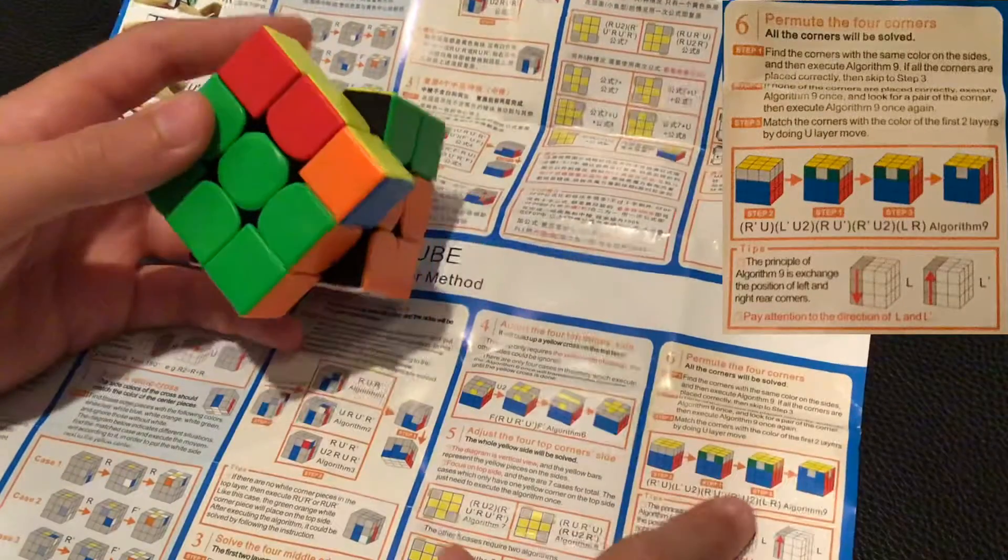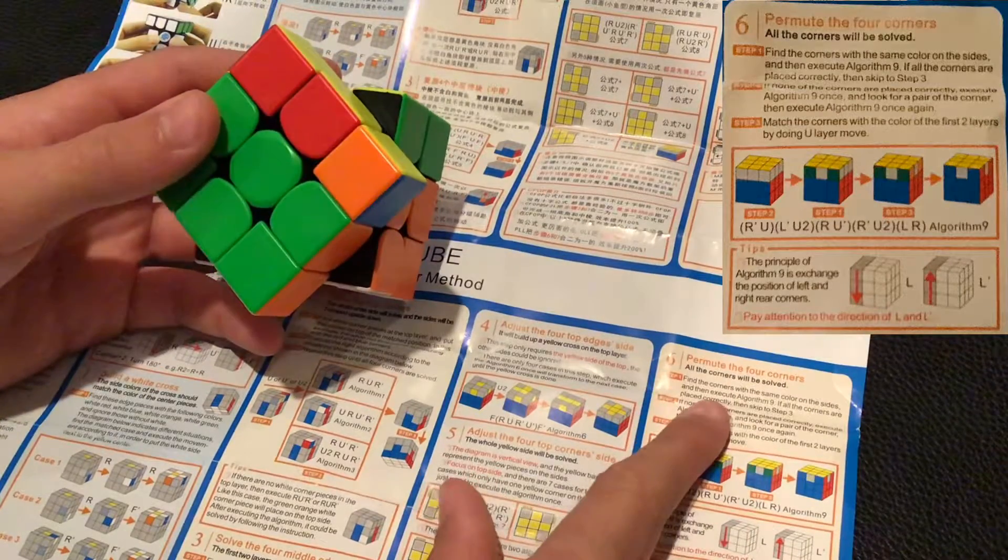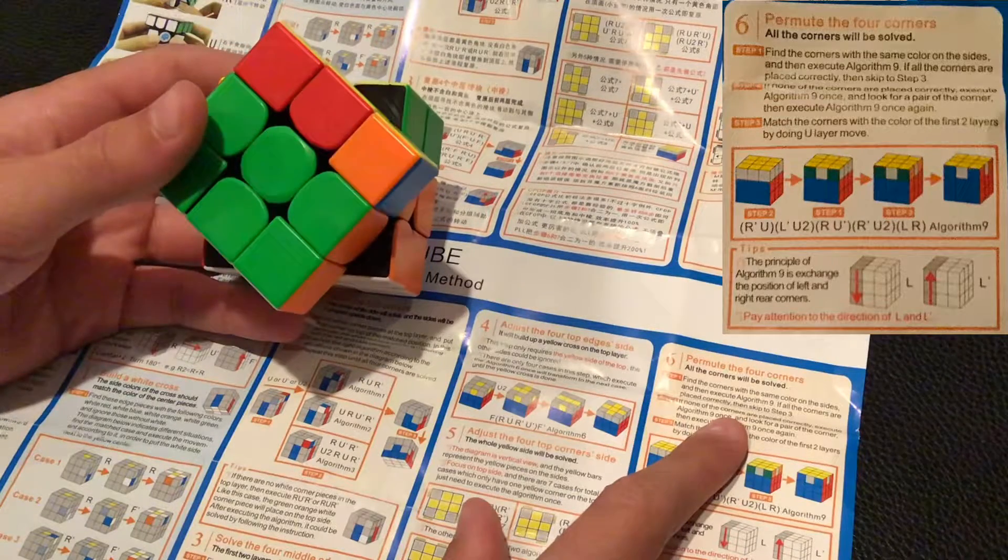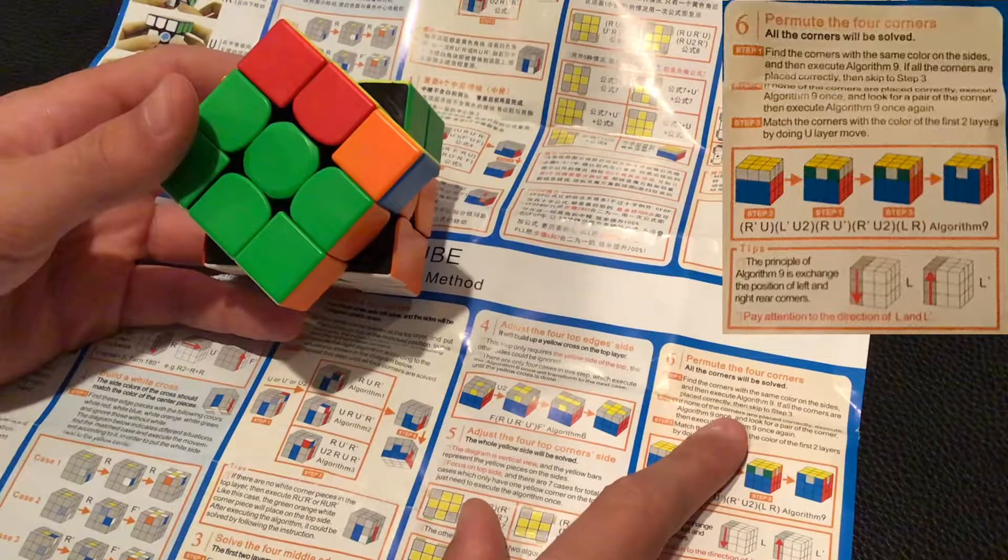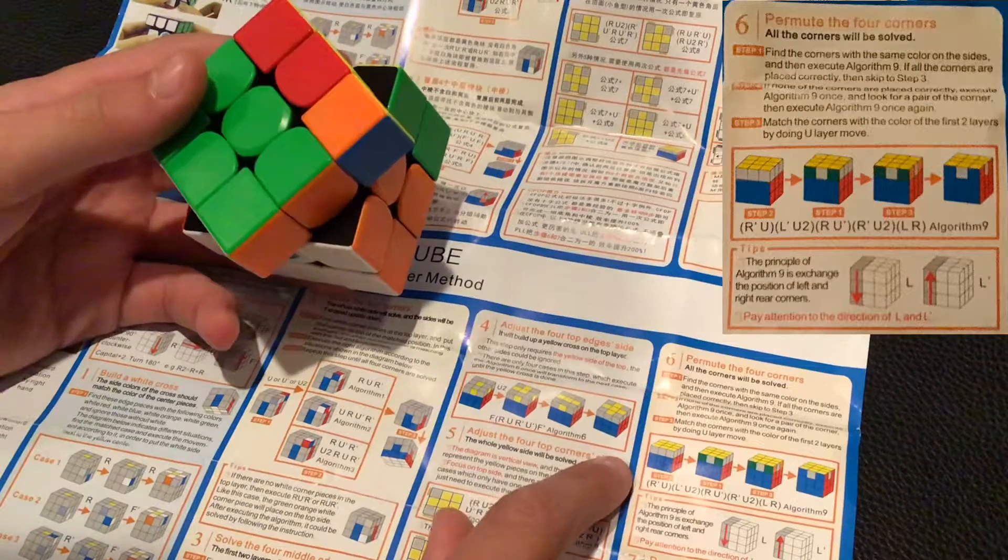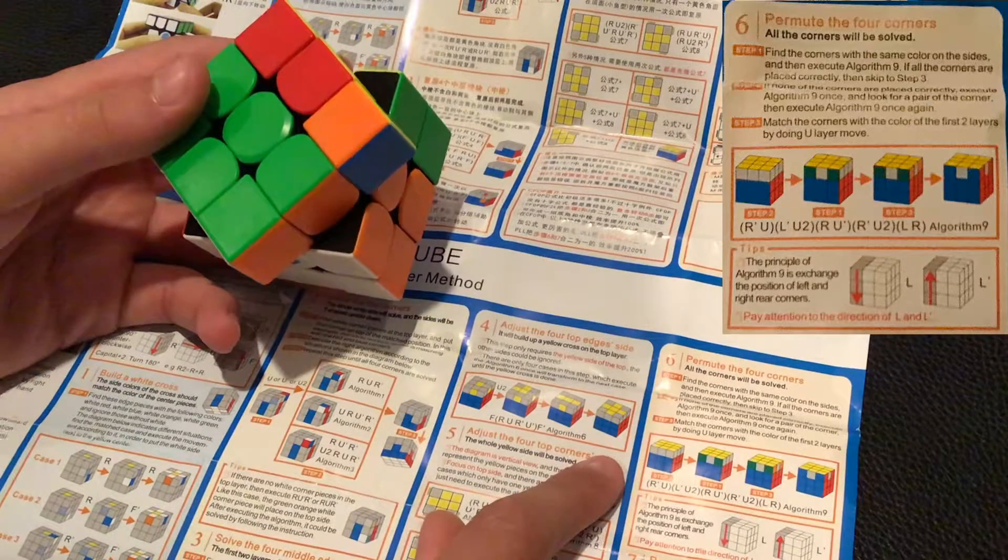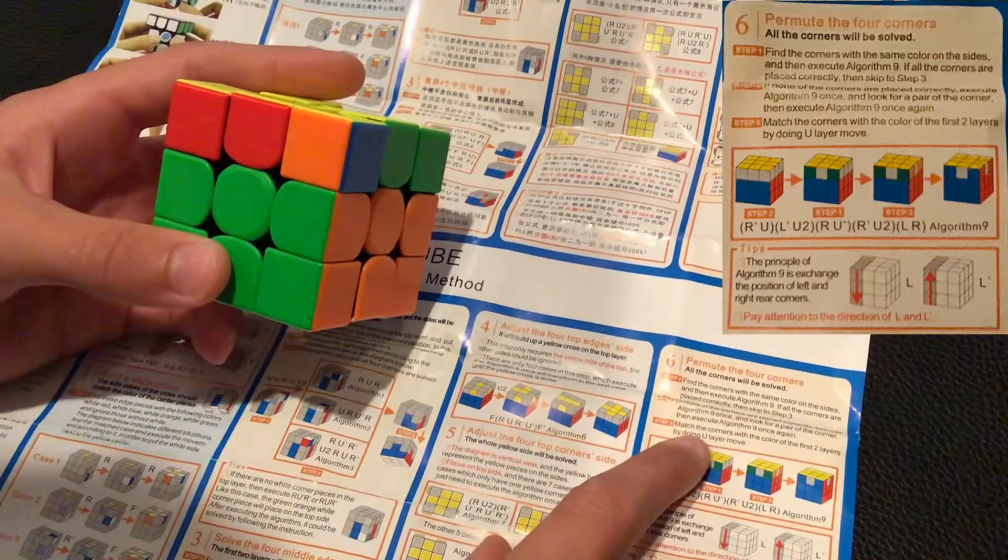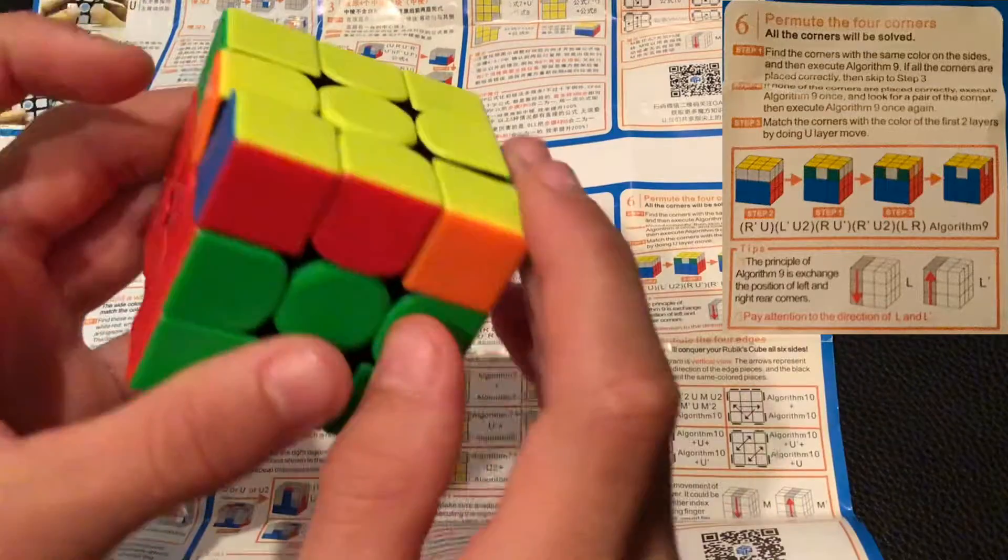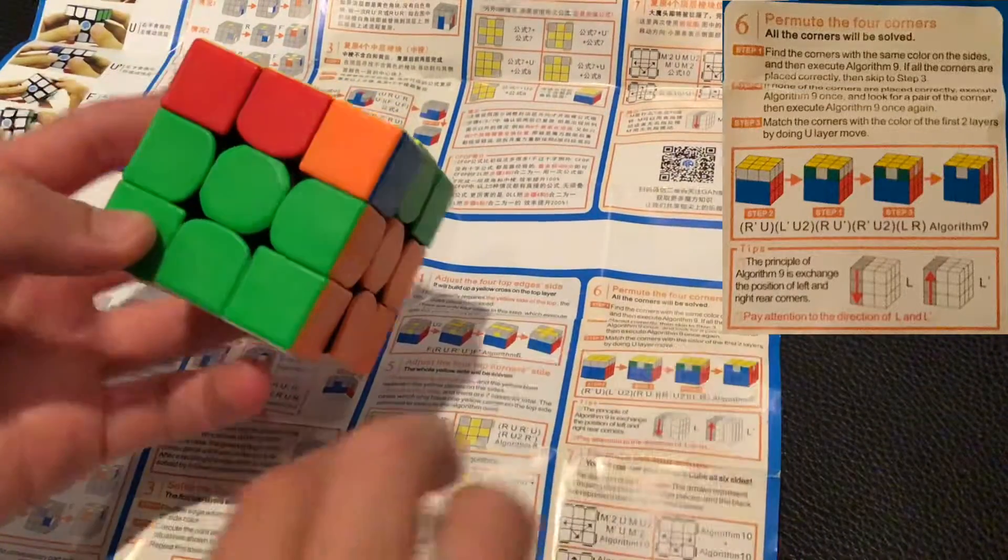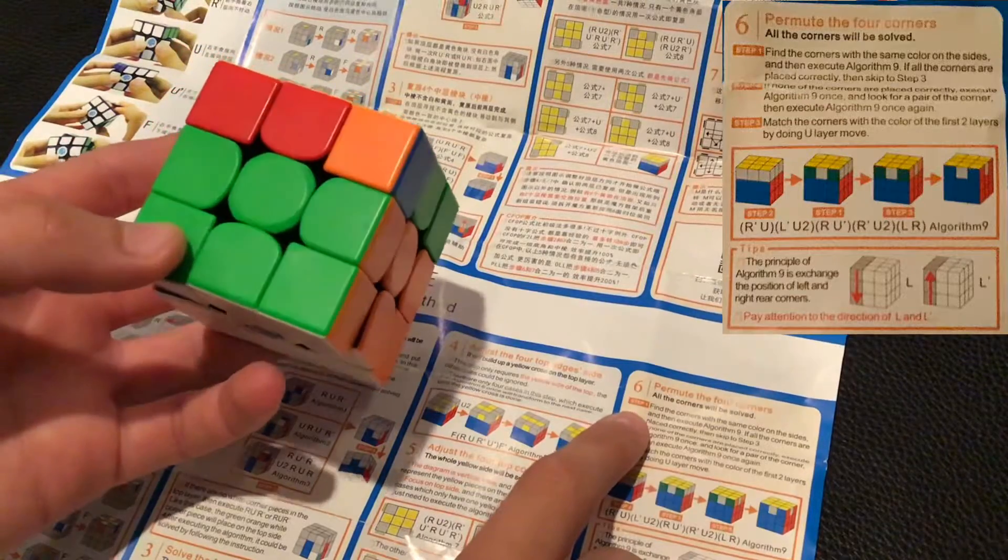So permute the four corners. This is basically the beginner method. Find the corners with the same color on the sides and then execute algorithm nine. If the corners place correctly, then skip to step three. So I need to do this algorithm, I guess. All right. So now we're on the last layer. And at this point, I really feel like doing the Y perm, but I can't really do that. And now I have to do the directions to permute the four corners.